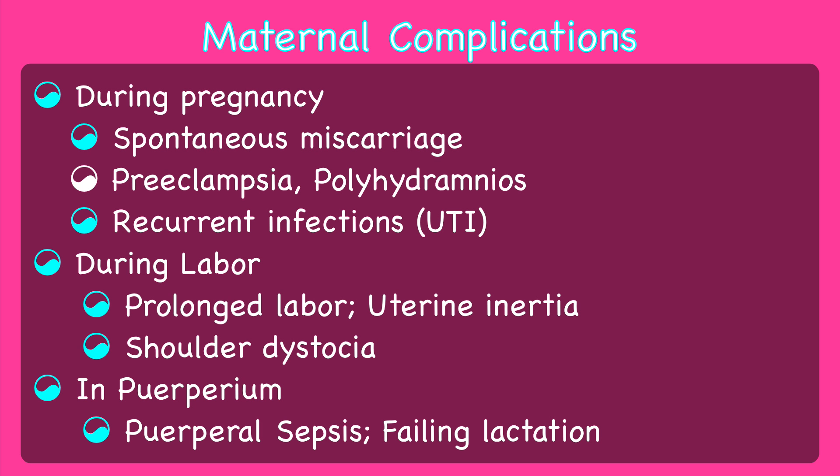The short-term effects of PGDM or GDM on pregnancy include: during pregnancy — spontaneous miscarriage if diabetes is uncontrolled, infections such as urinary tract infections, preeclampsia and polyhydramnios; during labor — prolonged labor, uterine inertia and shoulder dystocia; and in the puerperium — puerperal sepsis and failing lactation.